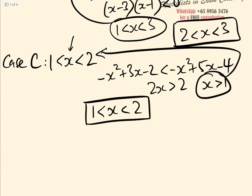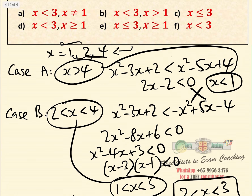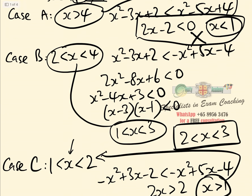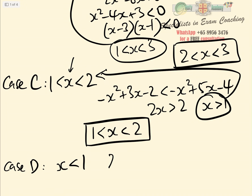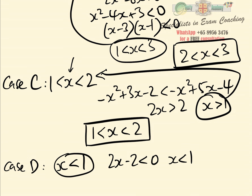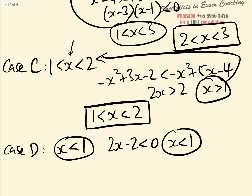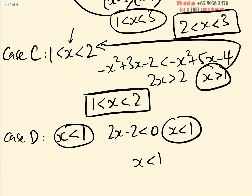Case d: x less than 1. Both quadratics are positive here, so it's the same as Case a, giving 2x minus 2 less than 0, i.e. x less than 1. Obviously when x is less than 1, x is less than 1, so that is also a solution.